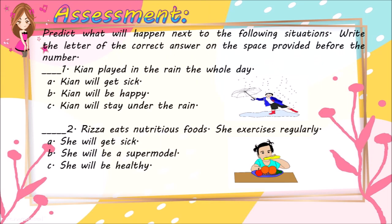Predict what will happen next to the following situations. Write the letter of the correct answer on the space provided before the number. Number 1: Kian played in the rain the whole day. A. Kian will get sick. B. Kian will be happy. C. Kian will stay under the rain.